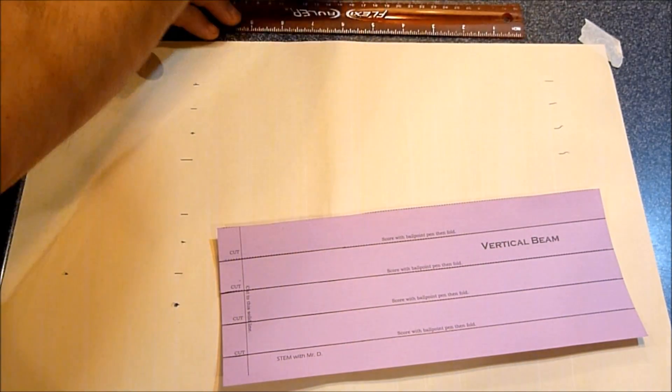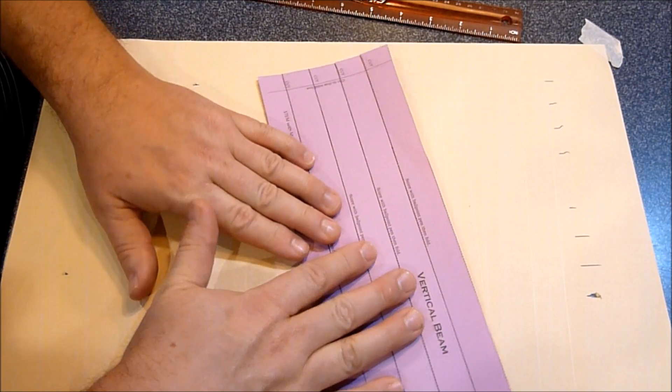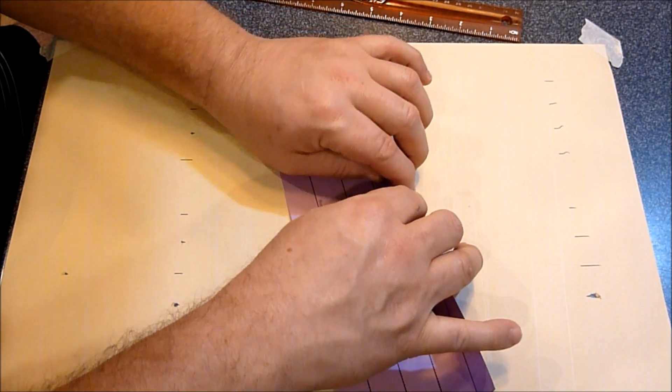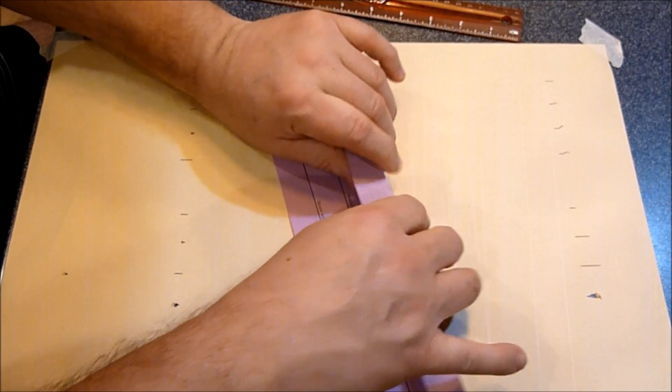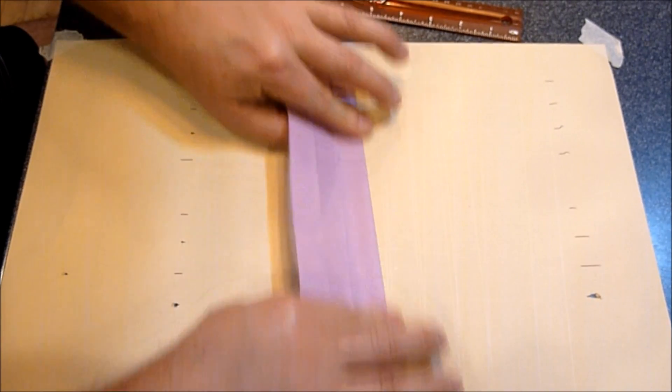So now we're going to fold. All you do is lay your beam down flat and then you just fold to the score line and then fold to the score line. You just make those four folds.